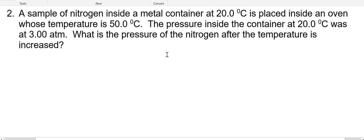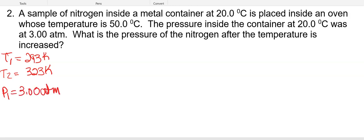So the second problem is a sample of nitrogen inside a metal container at 20 degrees C is put in an oven, whose temperature is 50 degrees C. The pressure inside the container at 20 degrees C, so initial pressure was 3 atm, what is the new pressure after it's in the oven? So we'll look, and we're going to start by identifying variables. So T1 is going to be 20 plus 273, so that's 293. Our T2 is 50 plus 273, which comes out to 323. Our initial pressure when it was at the lower temperature was 3 atm's, and we're solving for P2.